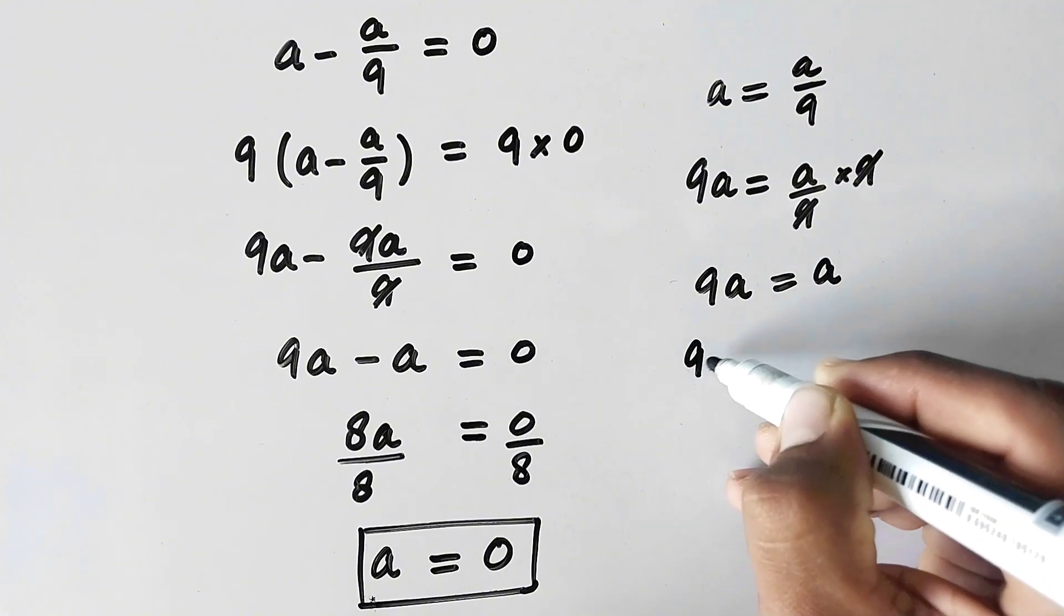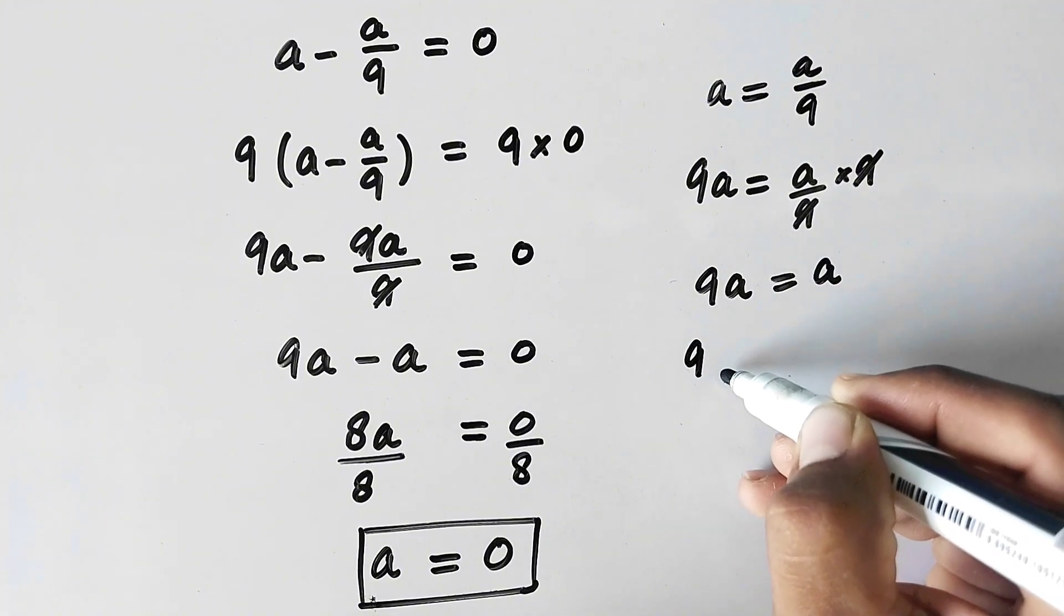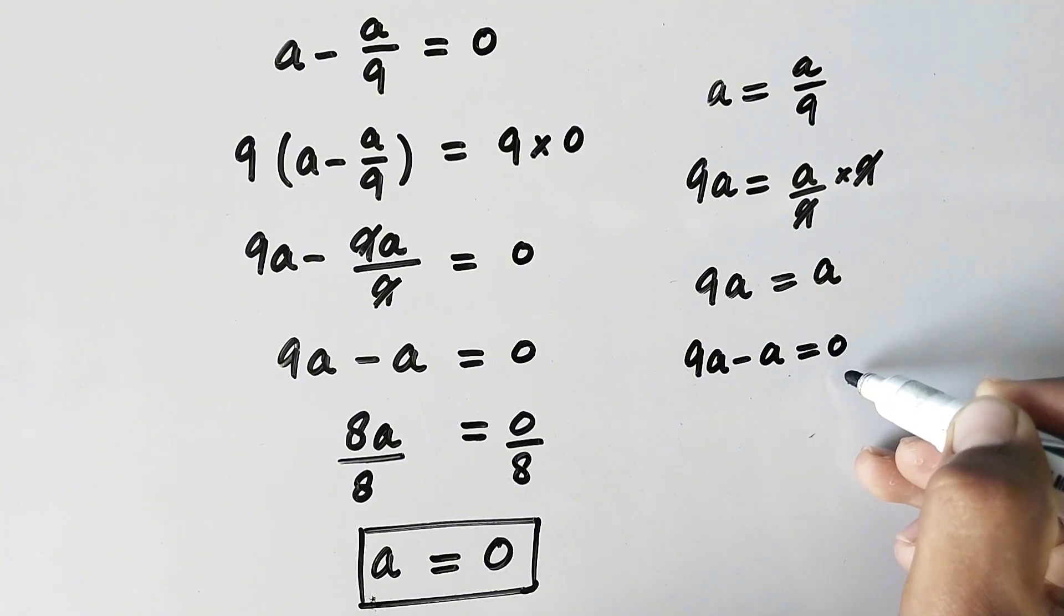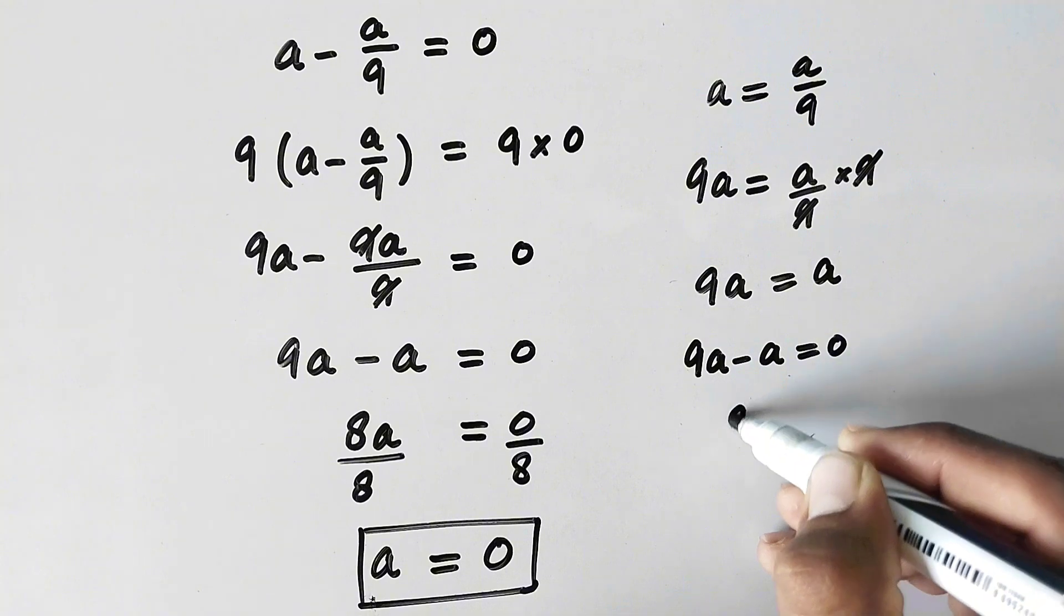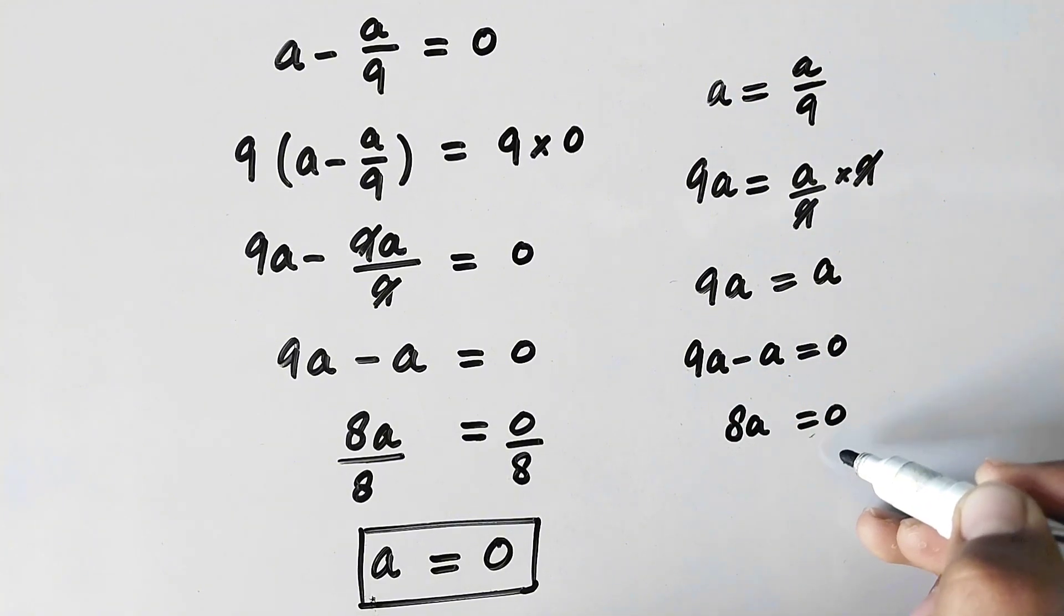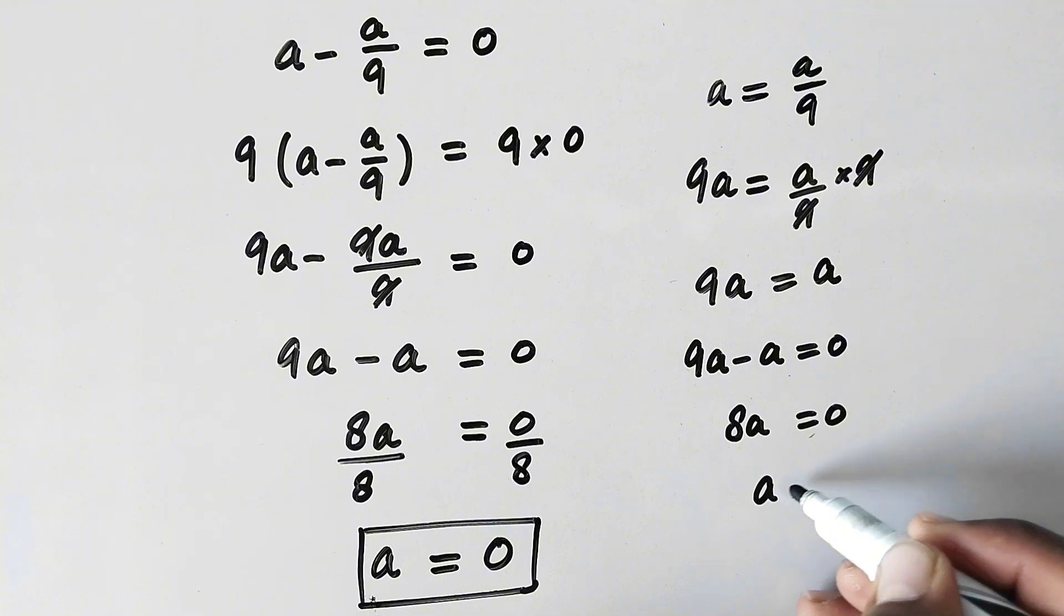Here will be 9a equal to a. Or in the next step we will take this value to the left hand side. So here will be 9a minus a is equal to 0. And here will be 8a equal to 0.